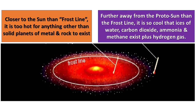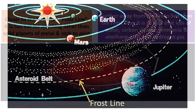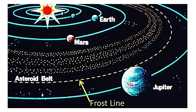This is easily explained in the plasma model, but first let's look at how the gravitational model tries to explain this. In that model, much of the compositions of the planets is accounted for by something called the frost line — the distance from the early hot sun where water became frost or ice. Closer in than the frost line, it was thought to be too hot for anything other than solid planets of metal and rock to form. Farther out than the frost line, it was assumed to be cool enough for ices of water, carbon dioxide, ammonia and methane to exist along with large quantities of hydrogen gas, giving rise to the gas and ice giants. The proposed position of the frost line lies outside the asteroid belt and just inside Jupiter's orbit.